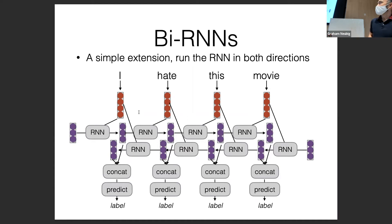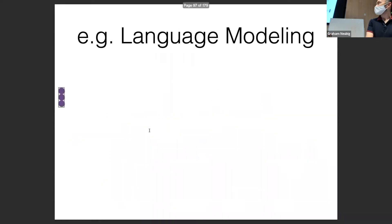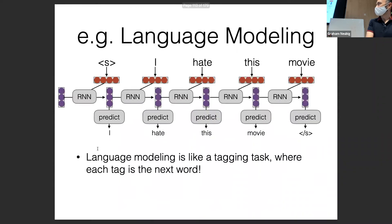It only becomes an autoregressive model if you take the output you're predicting and feed it back in. Just feeding in the context is not sufficient. The language model is autoregressive because you're taking the previously predicted word and feeding it back in.